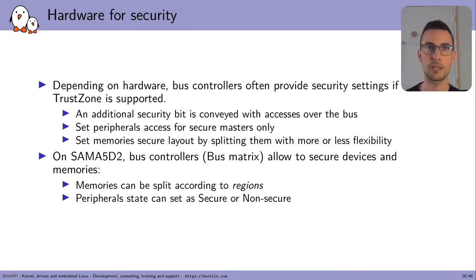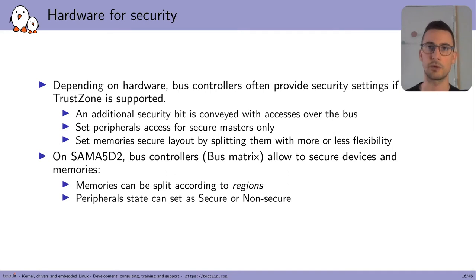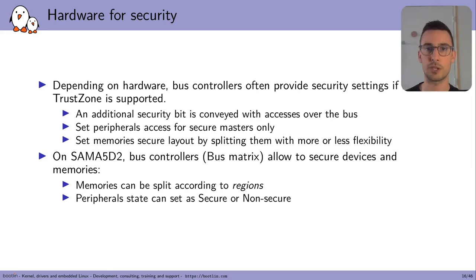In order to secure these peripherals and memories, depending on your hardware, you often have bus controllers which provide security settings based on ARM TrustZone. There is an additional security bit conveyed with accesses over the bus, which allows the hardware to know if the access came from a secure master or a non-secure one. This bus controller also allows setting the secure status of different peripherals and memories. For memories, there is a possibility to split them, depending on the controller, with more or less flexibility. On the SAM A5D2, the bus controllers — named the bus matrix — allow securing devices and memory. The memories can be split according to region, and the peripheral states can be set as secure or non-secure to define which world is allowed to access them.